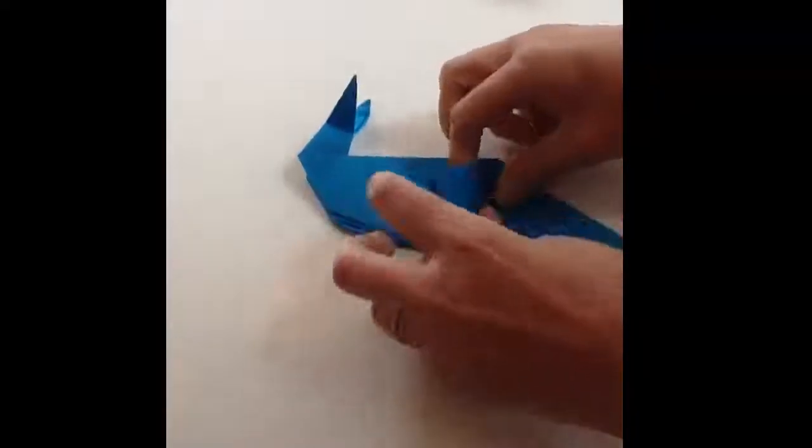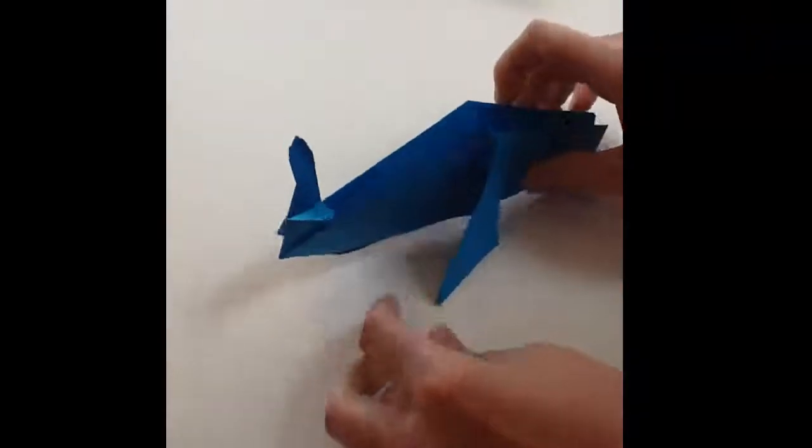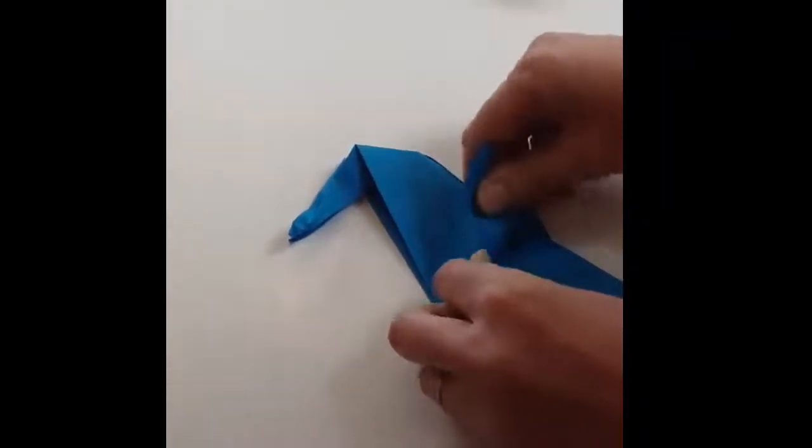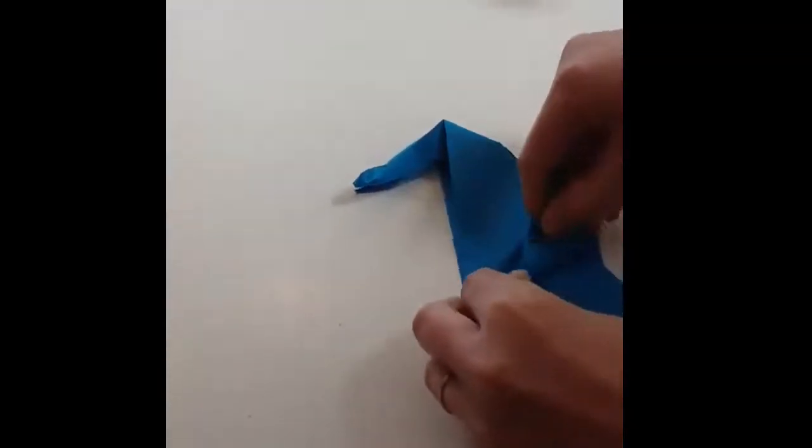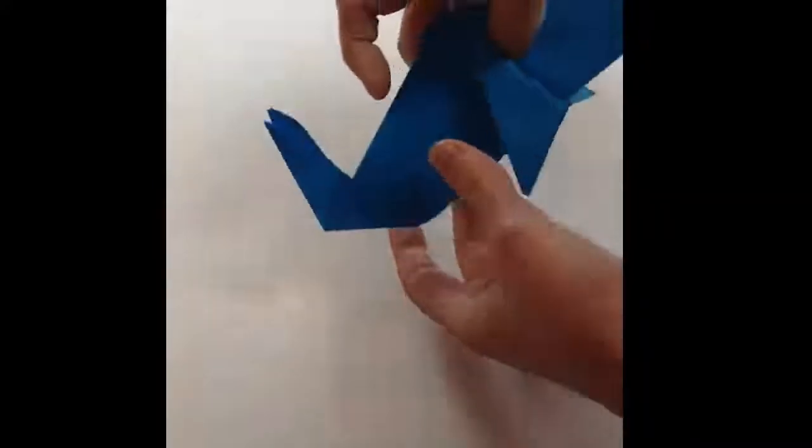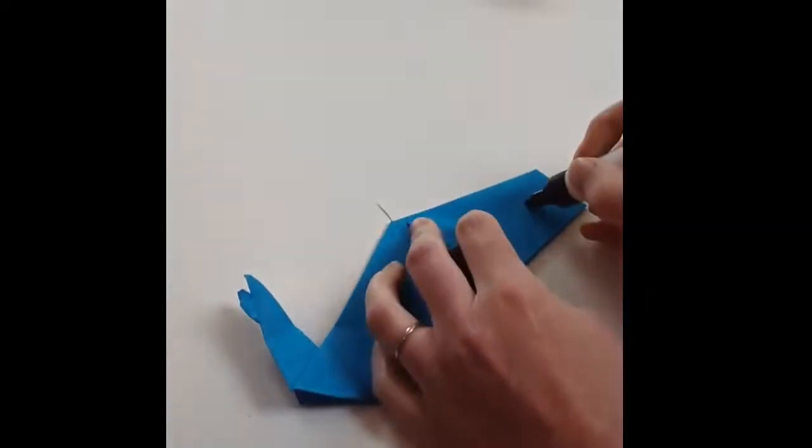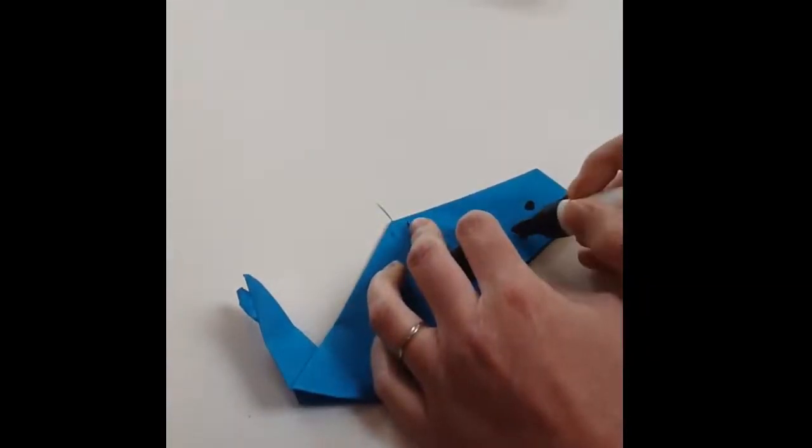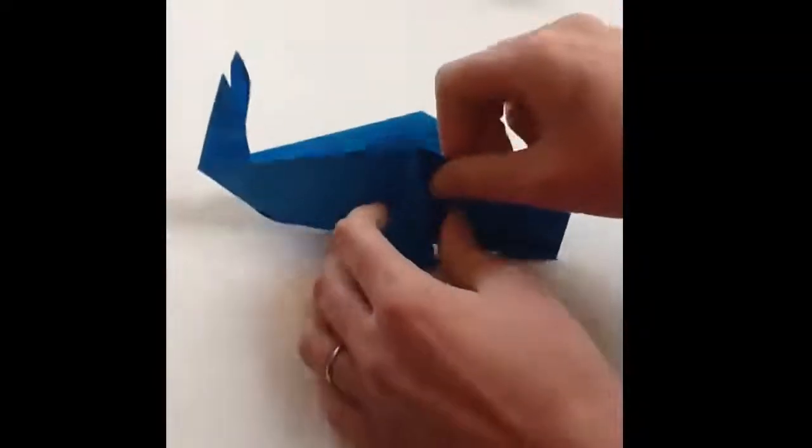And then if you want, you can adjust the positions of his fins so he stands up a bit better. Like that. And give him a face. Quite low-eyed and big smile mouth. There we go. And that's how you make your origami whale.